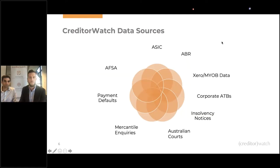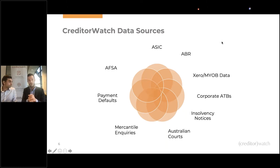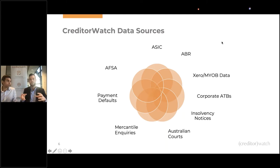Creditor Watch data sources — the single most important thing to look at today. We've got a wide variety of data sources. ASIC and Australian Business Register; any Creditor Watch customer — and if you use Xero or MYOB cloud version — you can integrate your accounting platform with Creditor Watch and get a lot more insights. It's free to do, and you start to see invoices within Creditor Watch reports. So if you receive an alert saying someone's gone into administration, you click the link, take it to the credit report, and see that they owe you $50,000 outstanding — really important.